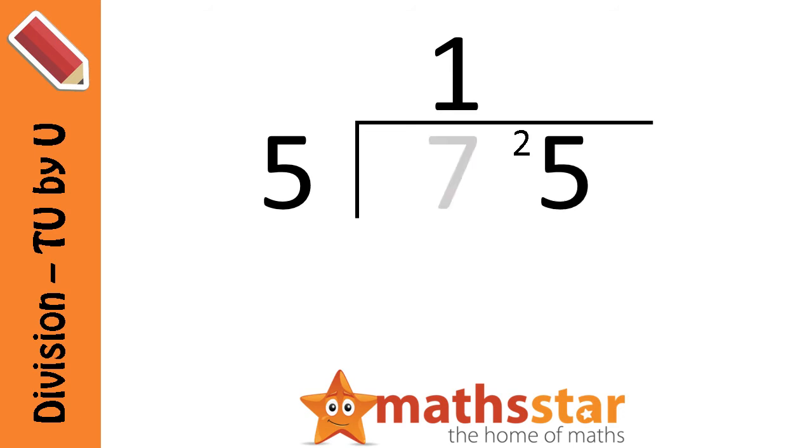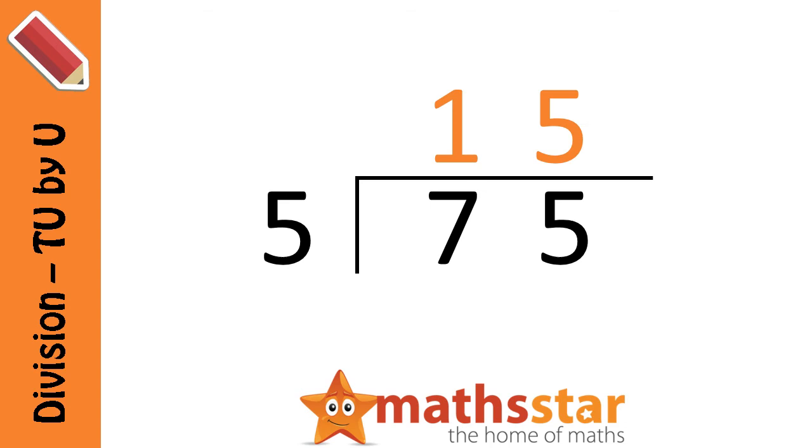So now we can move on to our next number, which has changed from 5 to 25. How many times can 25 be divided by 5? Well, the answer is 5, so we write that above the line. The number we now have above our line is our answer. So 75 divided by 5 is 15.